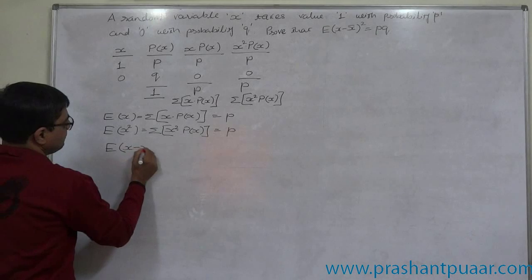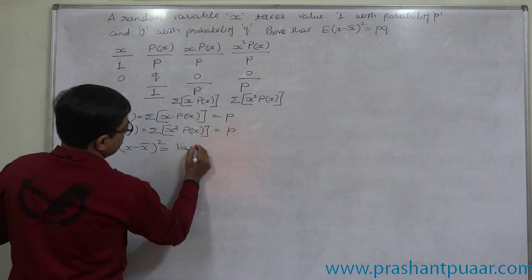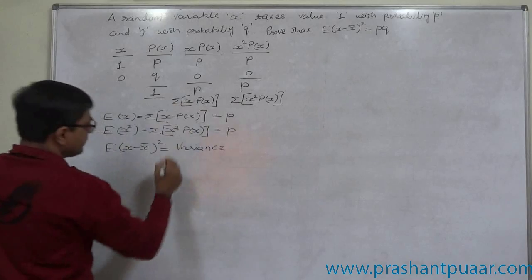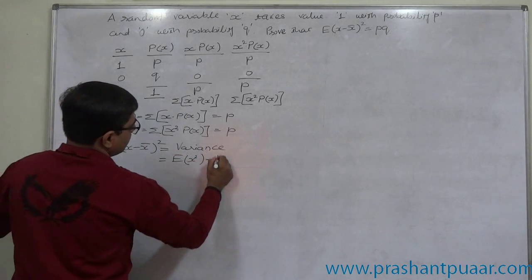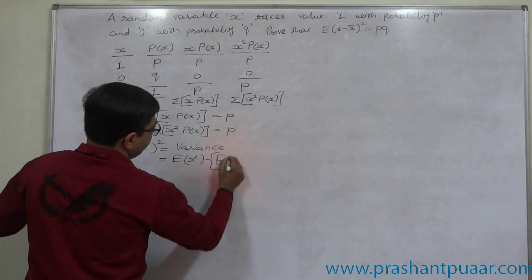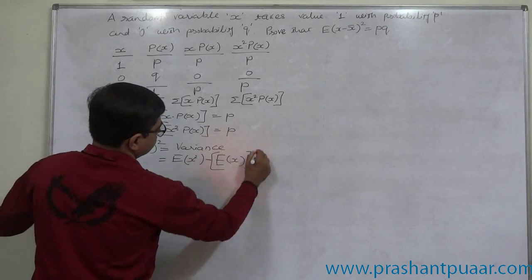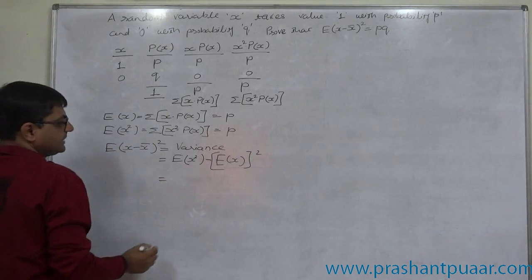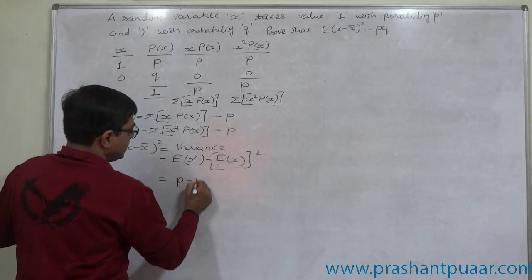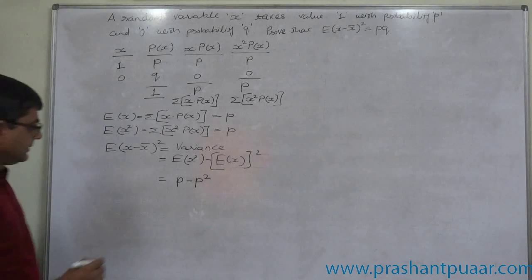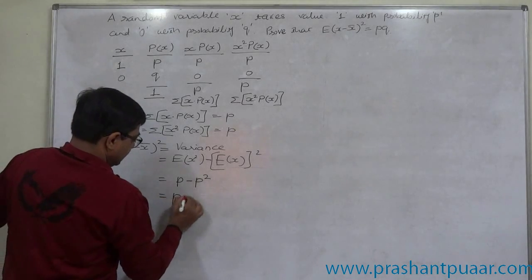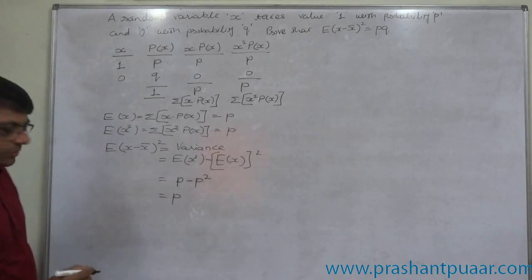E of X minus X bar whole square is variance and through another formula variance is E of X square minus E of X whole square. That means P minus P square. Let us take P as common factor.